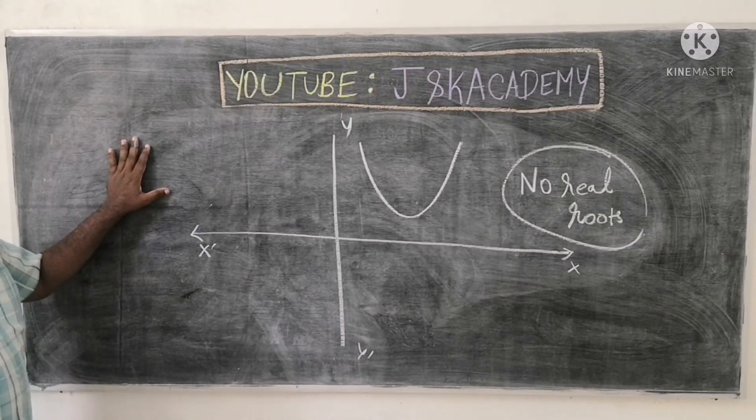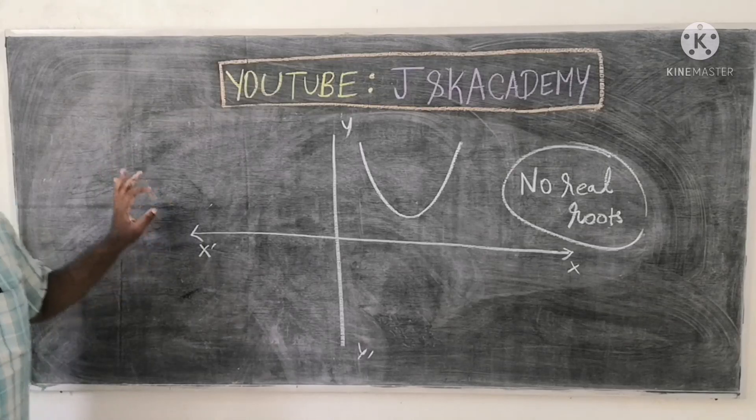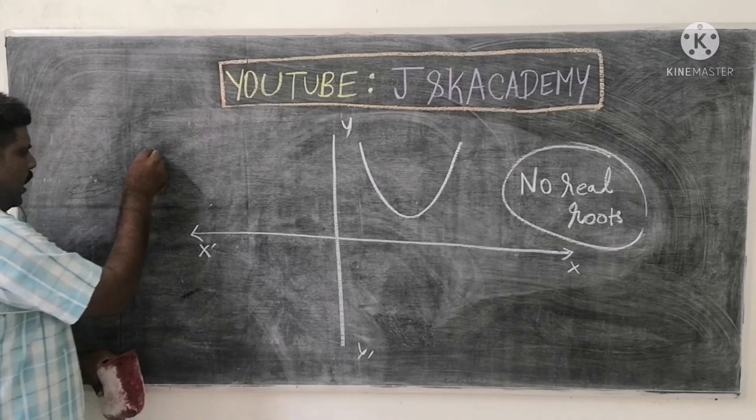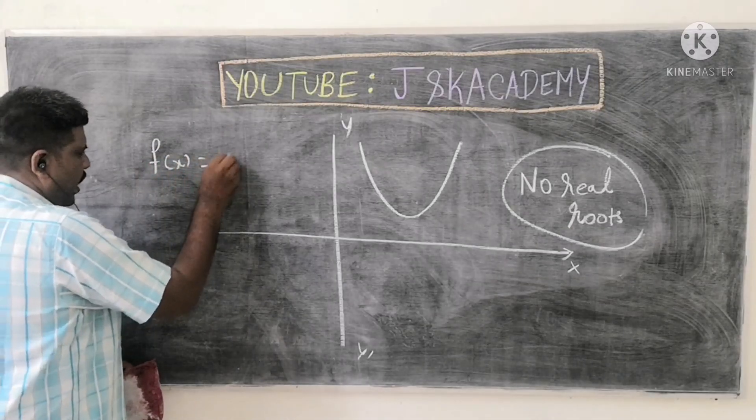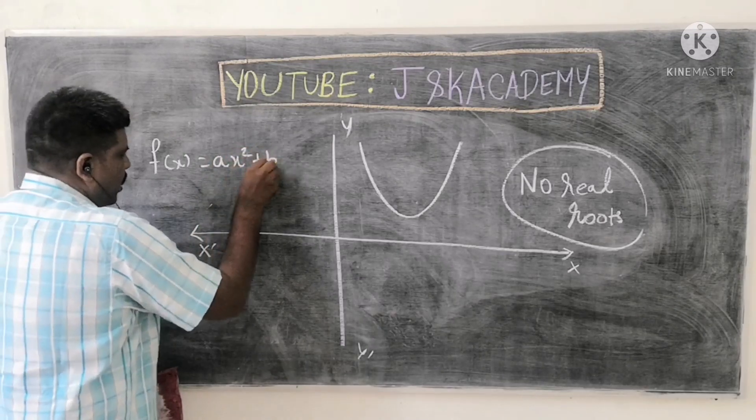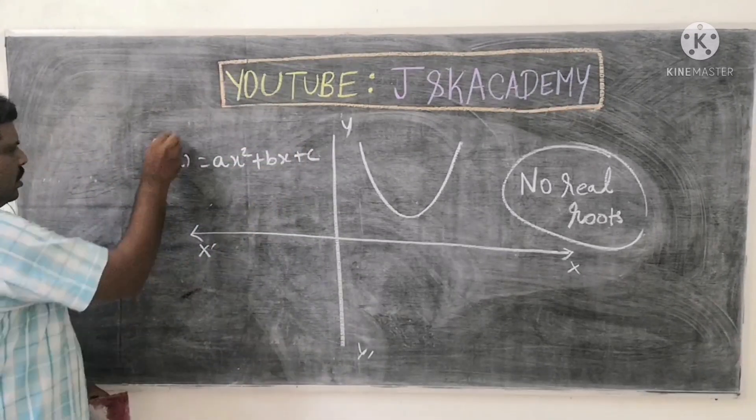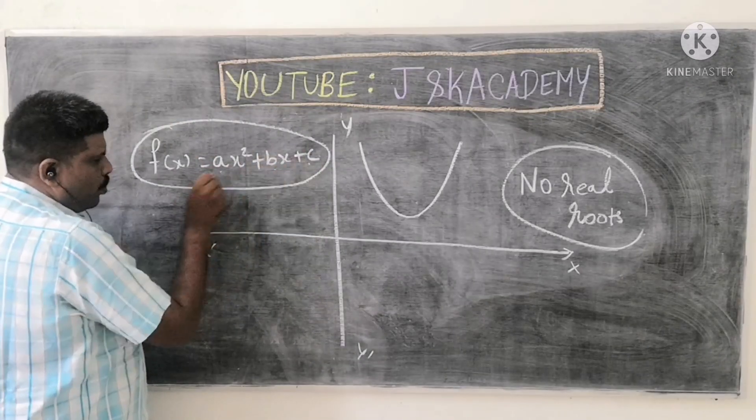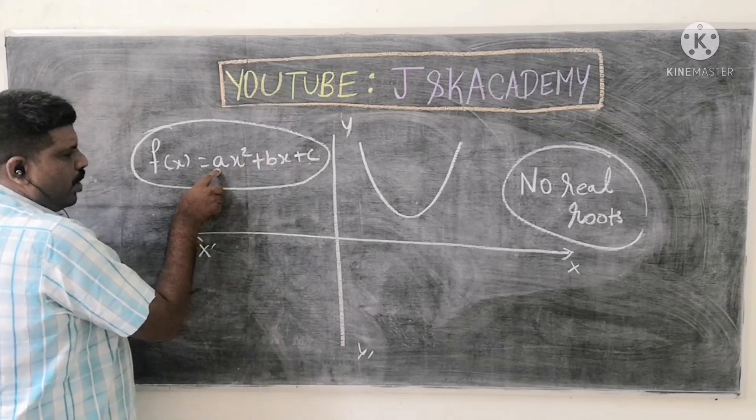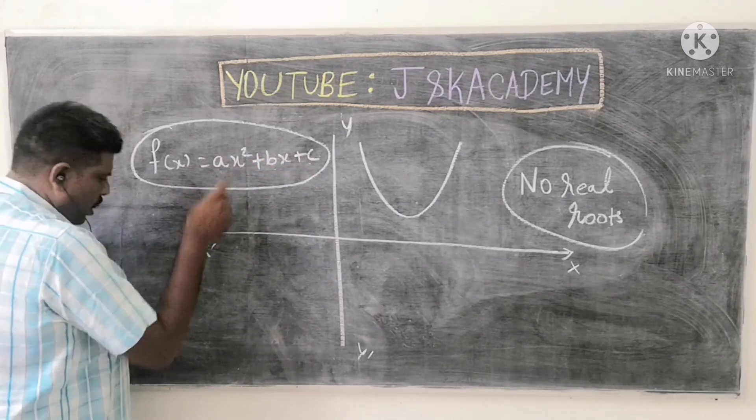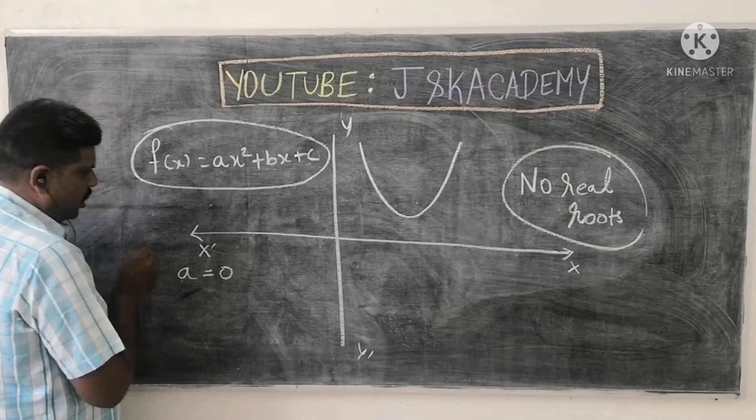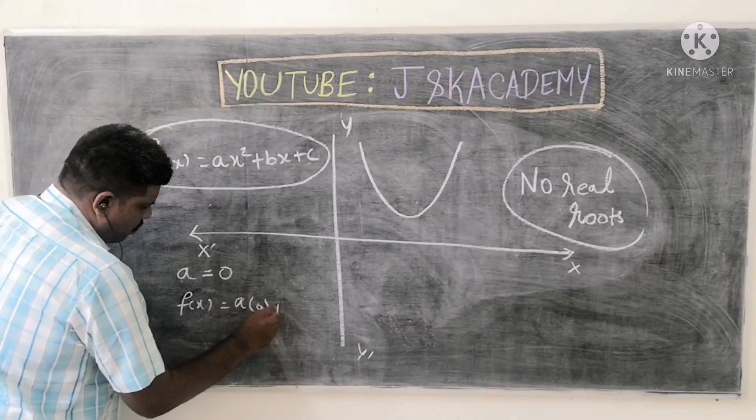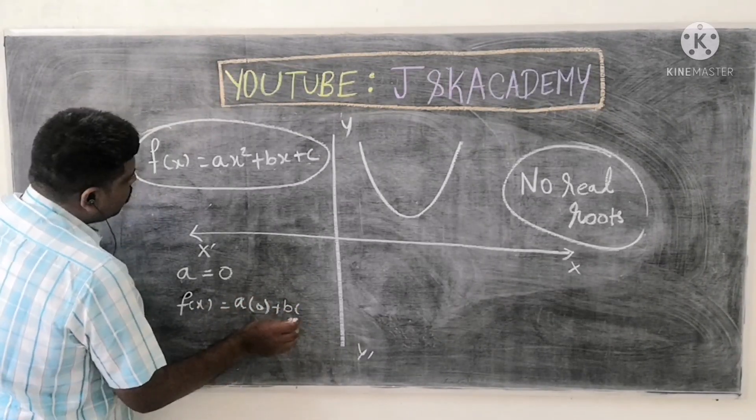So recap. Y, x axis, x axis. We examine A, B, C three. A value should not be 0. For example, if A is 0, f(x) = A times 0 plus B times 0 plus C. F(x) equals 0 times x² plus B times x plus C.